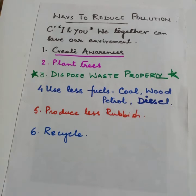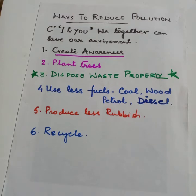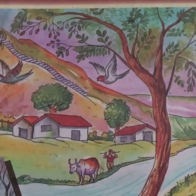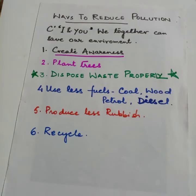Plant trees. By planting trees, pollution can be reduced because plants release water vapour through transpiration, prevent floods, bring rain, and help maintain the earth's temperature. Most importantly, plants protect against soil erosion. Plants absorb carbon dioxide and release oxygen.